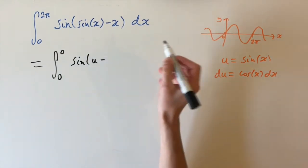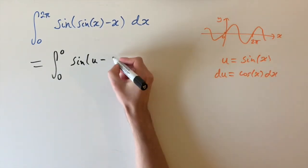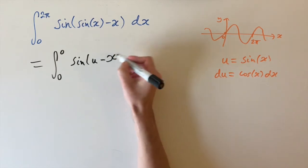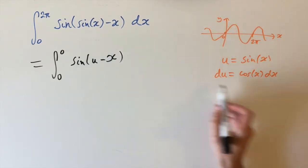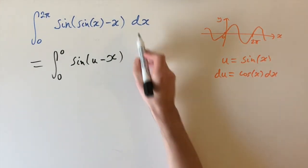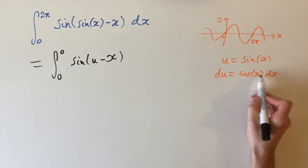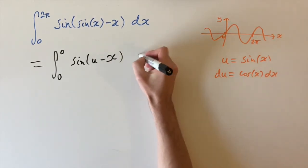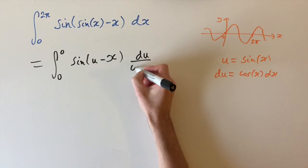...u minus x. So we're not sure what to do with x, I'll just write x in here. And then we want to change this. We want to replace dx by du. So we can just divide by cosine on both sides. This gives us du over cos(x).